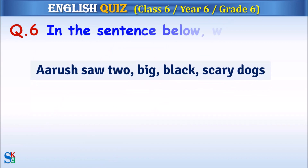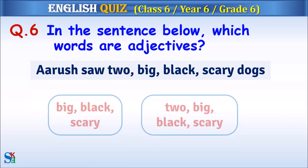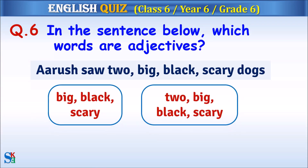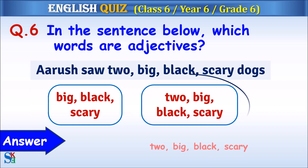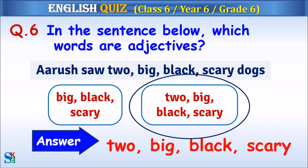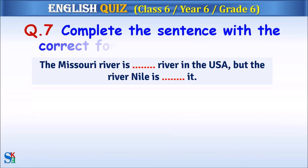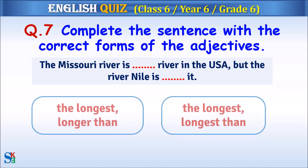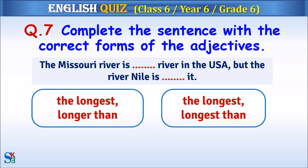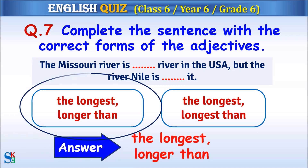Question 6: In the sentence below, which words are adjectives? The answer is two: 'big,' 'black,' and 'scary.' Question 7: Complete the sentence with the correct forms of the adjectives. The answer is 'the longest' and 'longer than.'